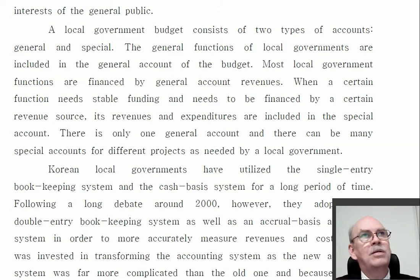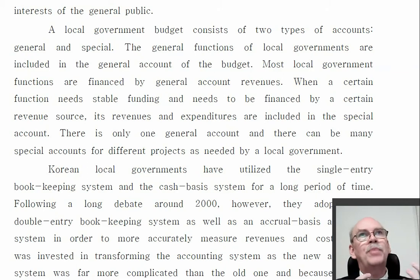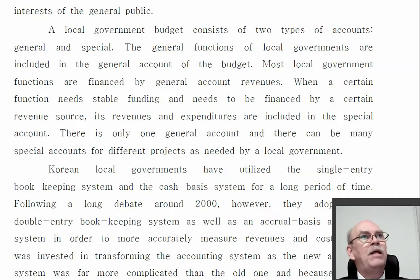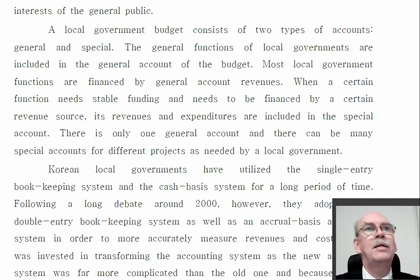When something is special — for example, a very long-term program needing stable funding, or certain laws say an activity can only be funded from special monies — then we create special accounts. Each special account is special and has different rules; that's why it's not in the general account. If we have four different special accounts with four different rules, we manage each separately. We typically have one general account with categories where money moves easily, and then many special accounts.